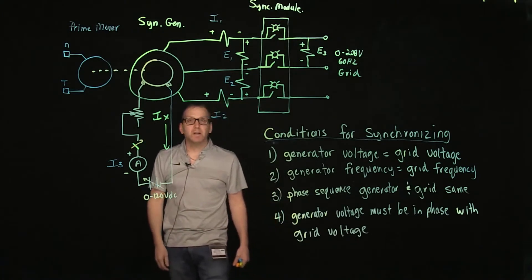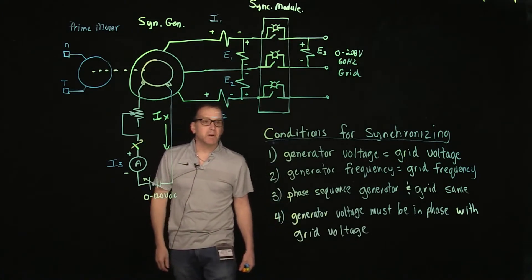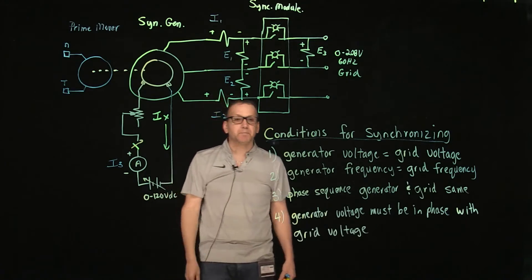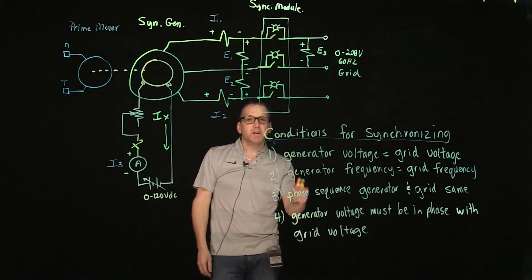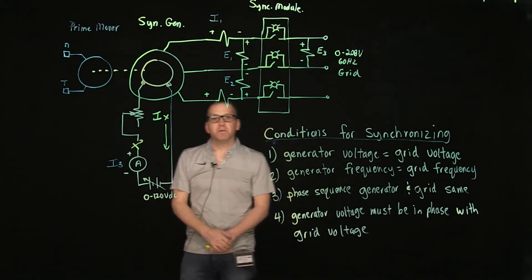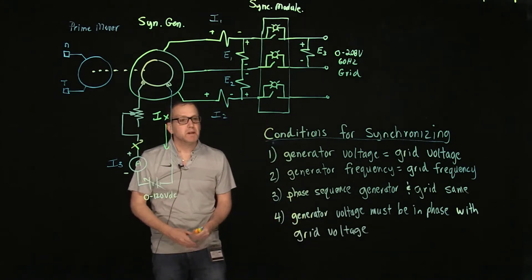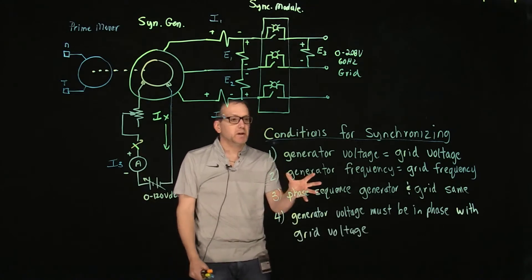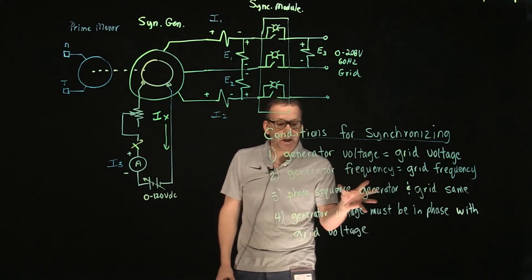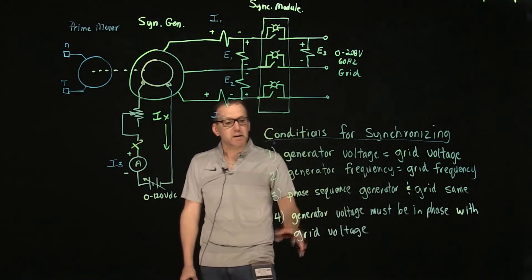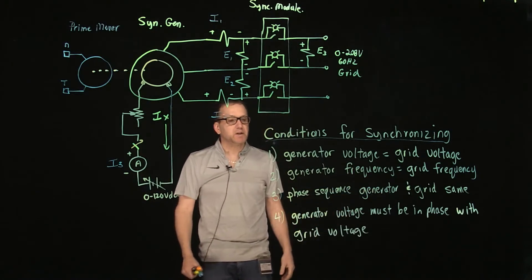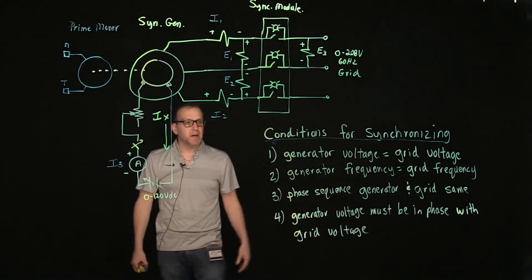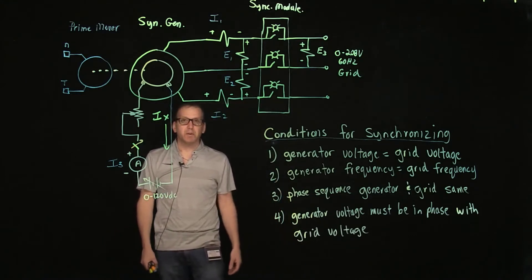The conditions are: the generator voltage must equal the grid voltage, the generator frequency must equal the grid frequency, the phase sequence of the generator and the grid must be the same, and the generator voltage must be in phase with the grid voltage.